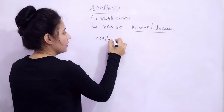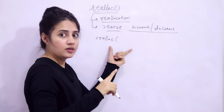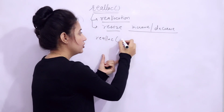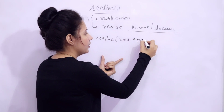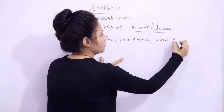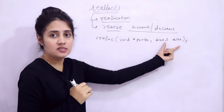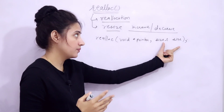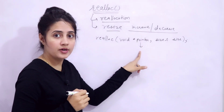The first argument is the previously allocated memory pointer. The second argument is the new size — maybe an increased size or decreased size, whatever new size you want to reallocate. This pointer is previously allocated pointer, and it would be void star — a generic pointer.